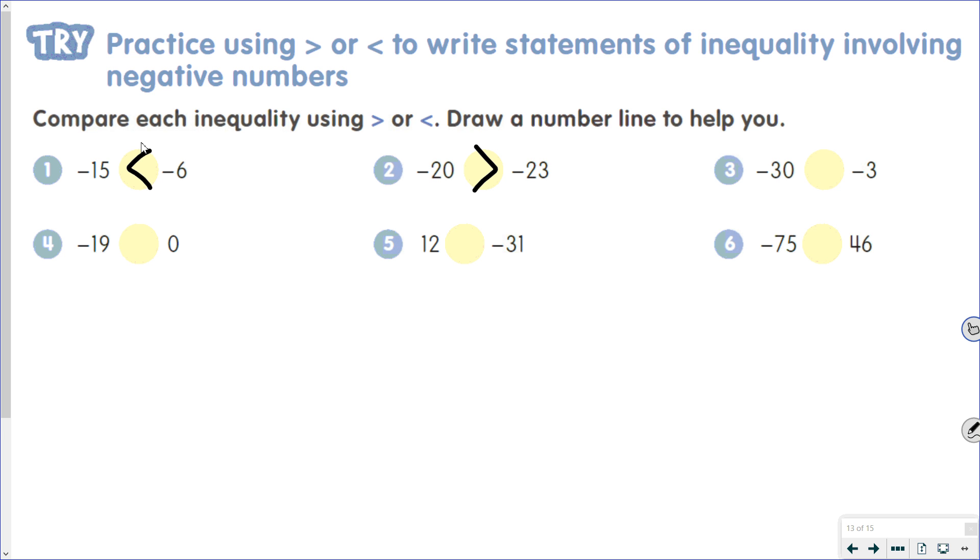For number 3, same thing: negative 30 is less than negative 3. For number 4, negative 19 is going to be less than 0, because all negative numbers are to the left of 0.